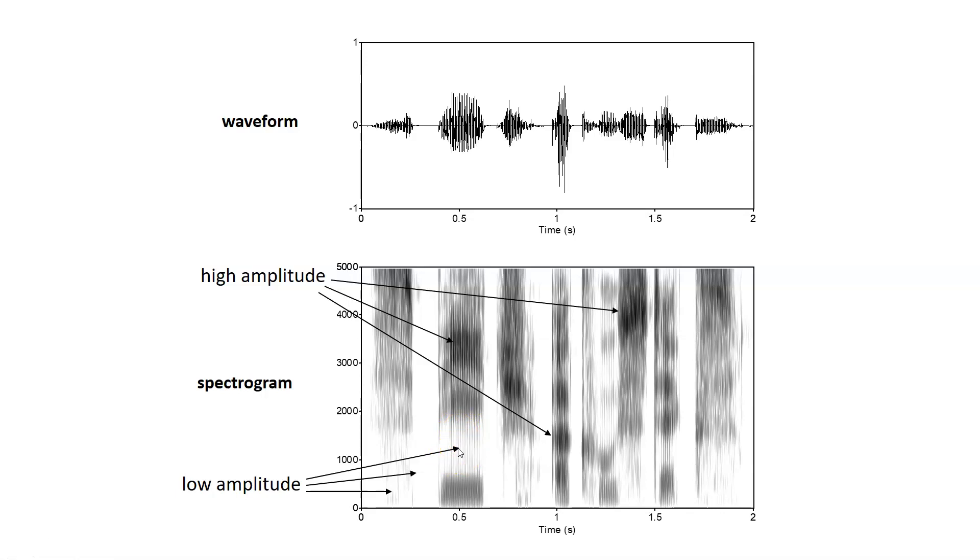So unlike the waveform display, where we can see amplitude from the peaks to the troughs, we get a more sophisticated view of amplitude in the spectrogram, showing us how each of the different frequency components is in terms of amplitude.